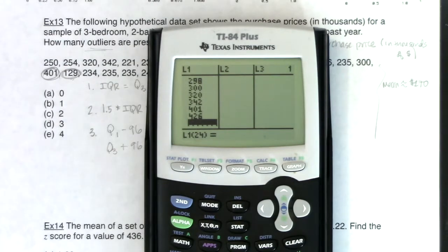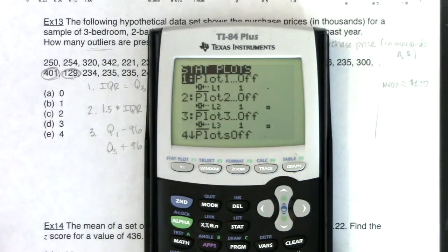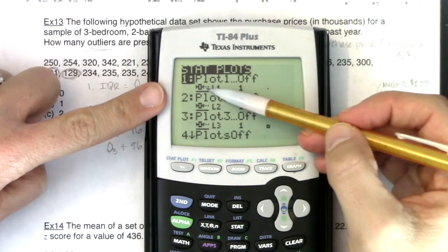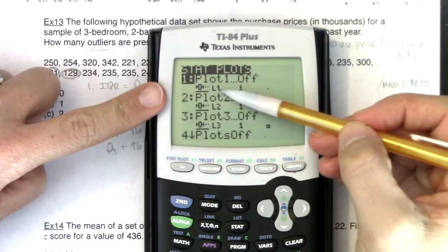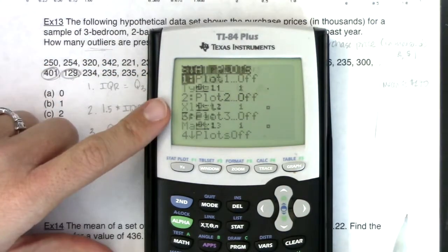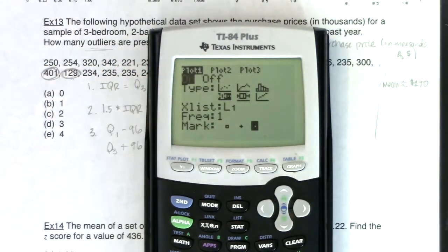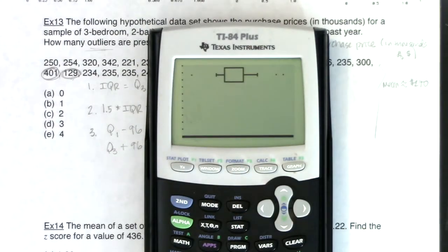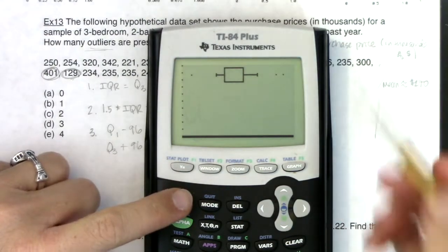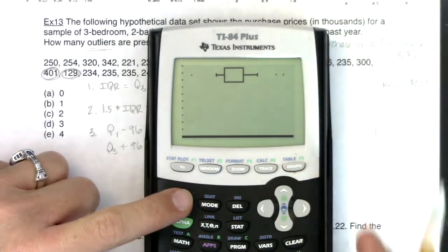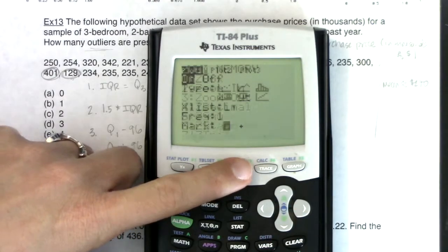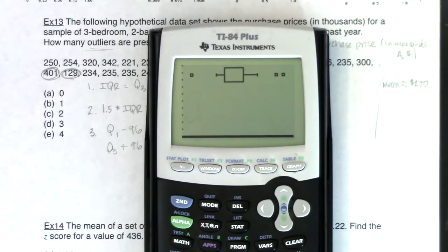So I actually have three outliers in this data set. If you wanted to kind of work around this safety zone because it is a multiple choice question, you could make a box plot. You see right now I have plot one, two, three off. But plot one, it's set up. I've got L1 against one, which is great because each of these data points should be represented once. If I turn that on and hit zoom nine, I should actually see three outliers. Let me change this back over to that hollow square. And I think that kind of shows it better on camera.